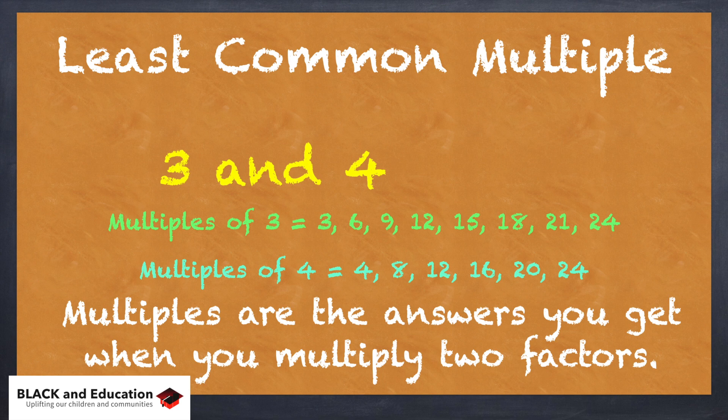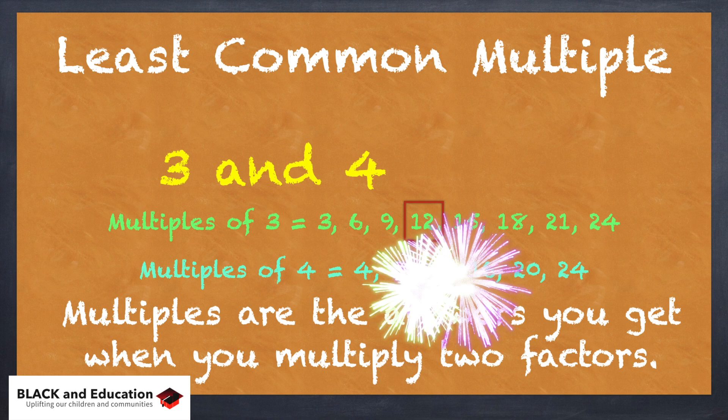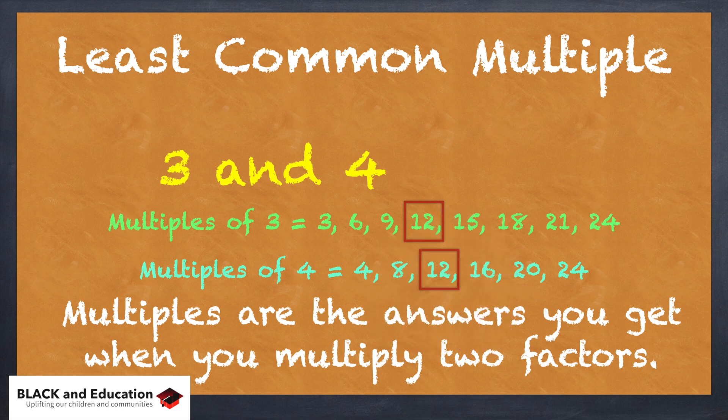What I notice automatically is the least common multiple they have in common is 12. The first one that I get to that's an answer for them where they are a factor is 12. So I know that obviously 4 times 3 is 12 and 3 times 4 is 12.